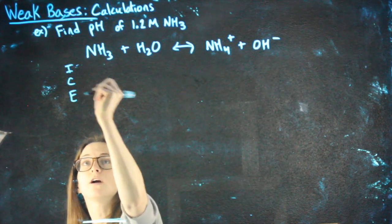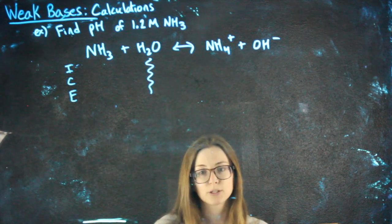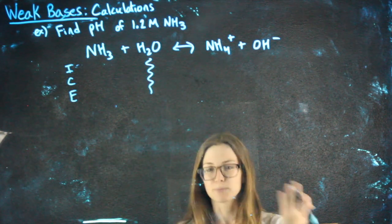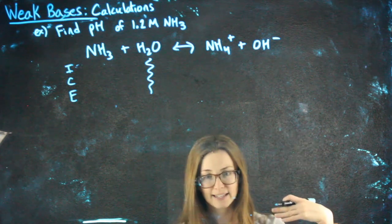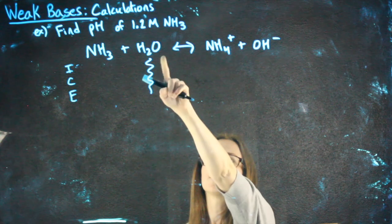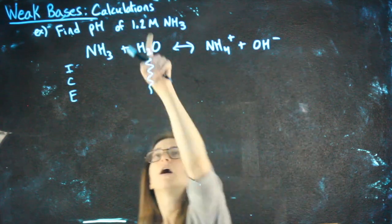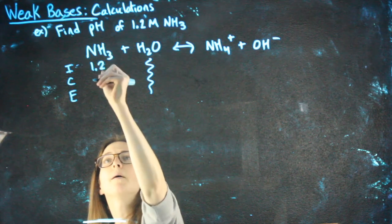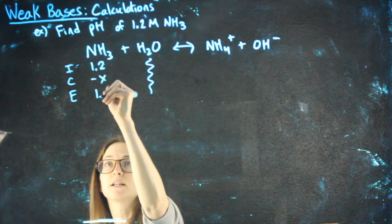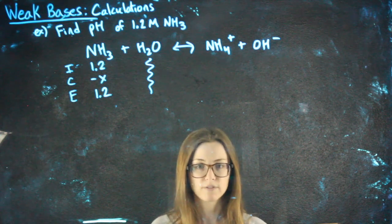In my ICE chart, I never need to fill out the water column, because water can't have a molarity, it's a pure liquid, it wouldn't end up in our K expression anyways. You can always squiggly line that out. The reason I include it here is to know how to write my reaction. It's 1.2 molar minus x, we can still assume that the x is really small, and we end up with 1.2 molar for the base.